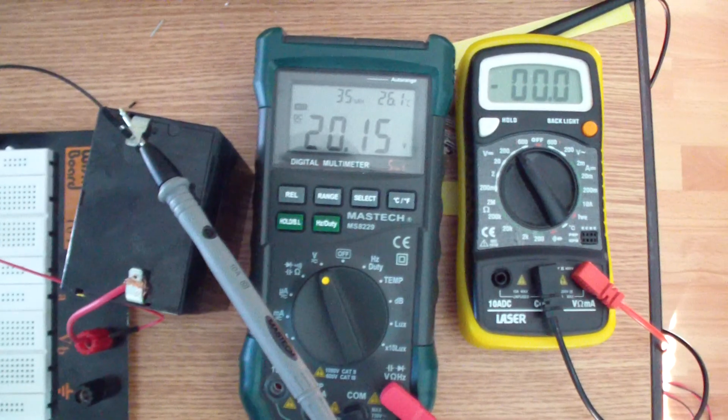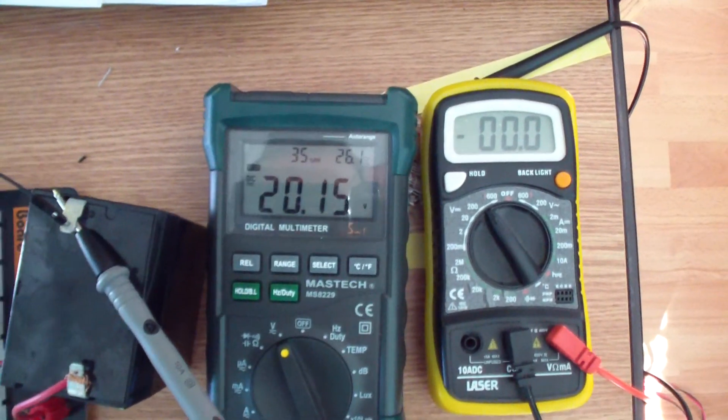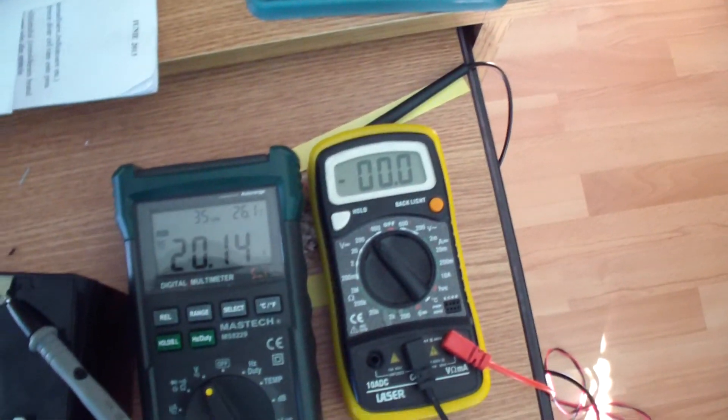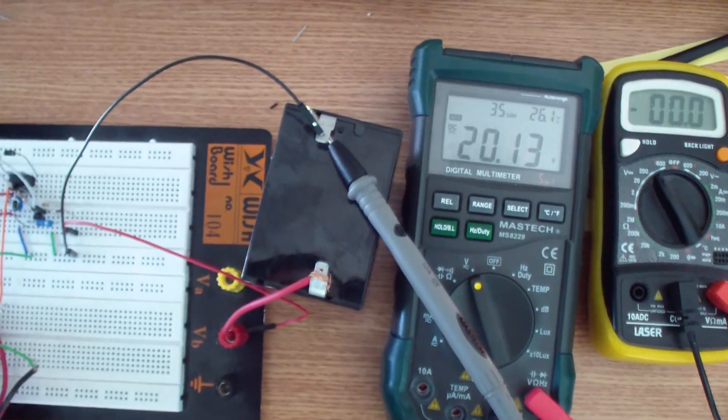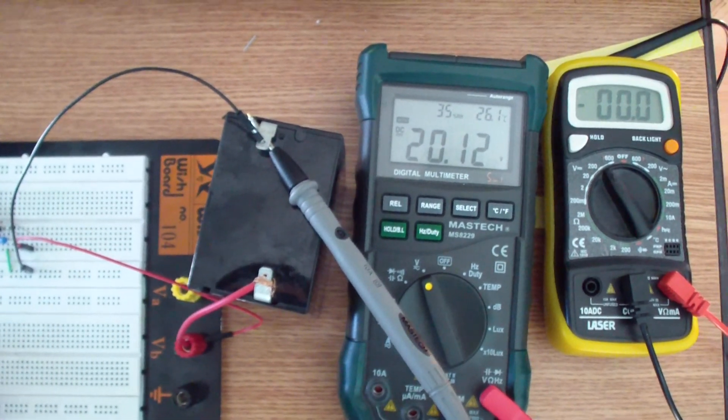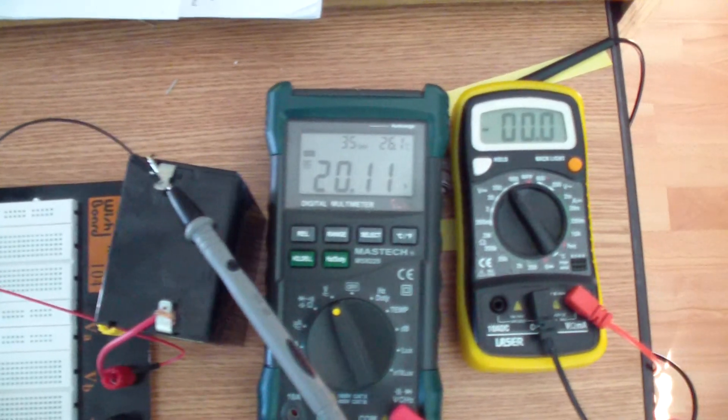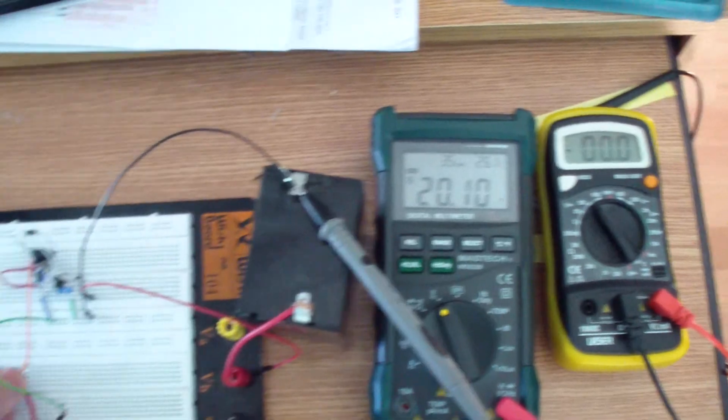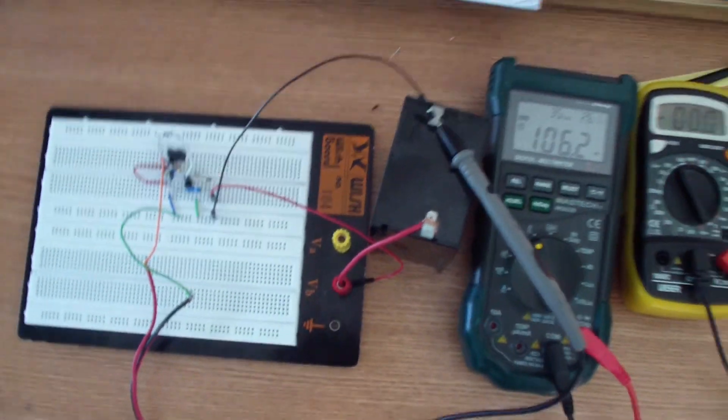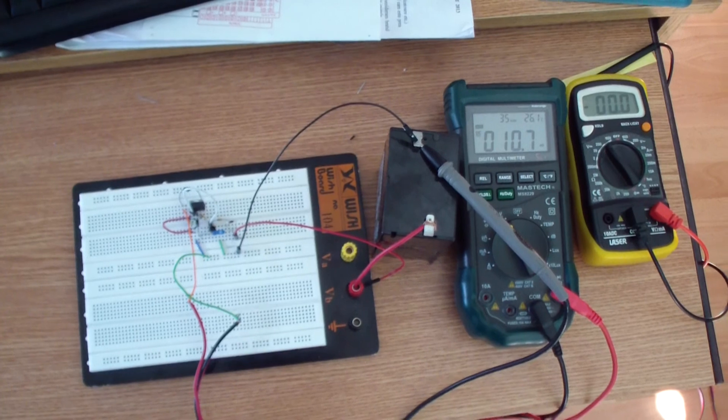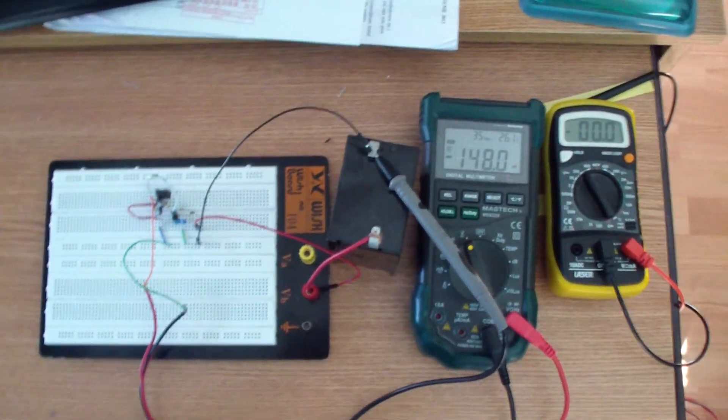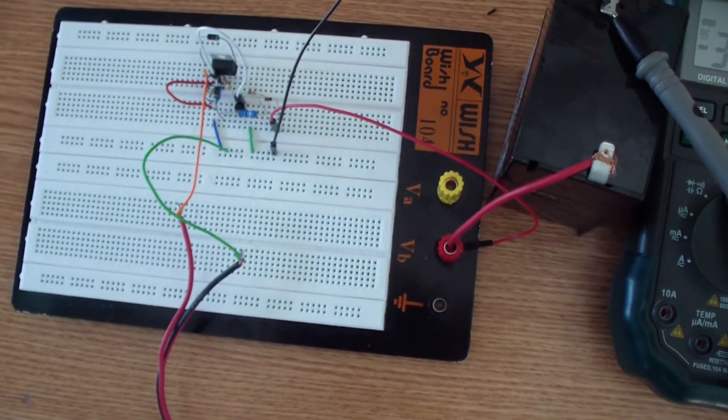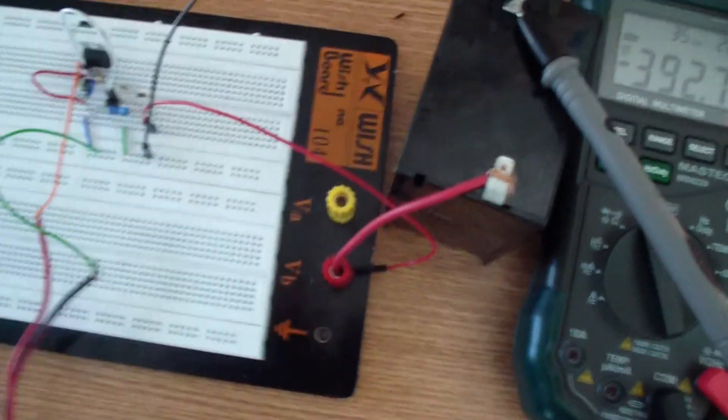Wow, actually my solar panel outputs 20 volts even when the battery is connected. That is pretty high. I thought that my solar panel outputs only 17 volts, but it seems it doesn't. As you can see, the circuit is working pretty well. I'm not sure if it's very good, but...